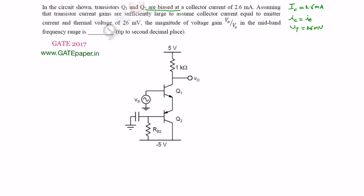We are going to calculate voltage gain V0 by Vs in the mid-frequency range. Mid-frequency range means where micro-farad capacitors are acting as short circuit, and pico-farad capacitors — that means junction capacitances between collector and base, and emitter and base — are acting as open circuits. Under mid-band frequency range, no capacitor effect is present.